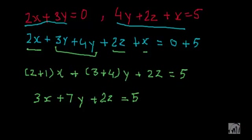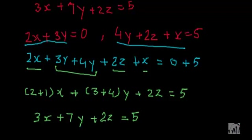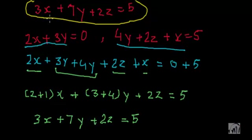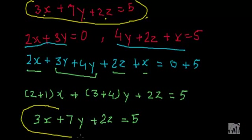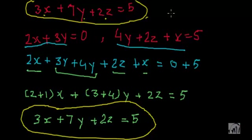This was the horizontal method. Let's compare answers. Using the column method we got 3x plus 7y plus 2z equal to 5, and using the horizontal method we also get 3x plus 7y plus 2z equal to 5. We get the same answer using both methods. I suggest you practice the horizontal method more, because it is more useful in higher mathematics. Thanks.